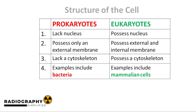The last difference is the lack of a cytoskeleton in prokaryotes. Just like your skeleton provides support to your body, the cytoskeleton provides support to the eukaryotic cell. The prokaryotic cell is a very simple cell that does not need or have a cytoskeleton. On the subject of radiation biology, we are more interested in eukaryotic cells, as the human body is made of eukaryotic cells. We'll be going over the different parts, or organelles, of the eukaryotic cell.